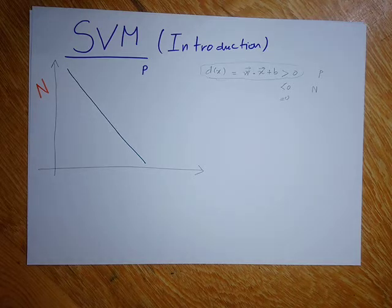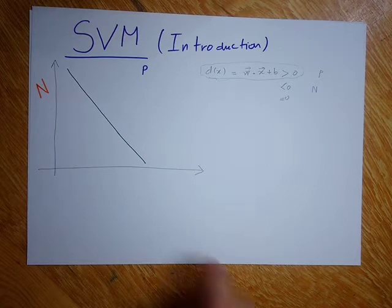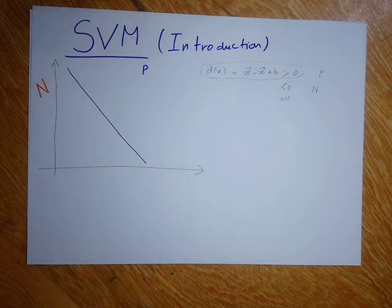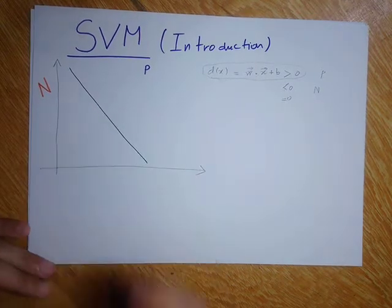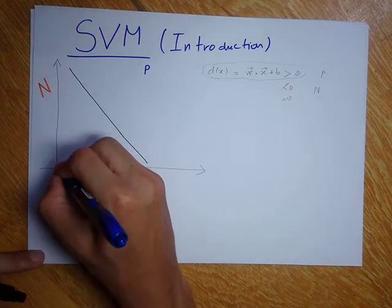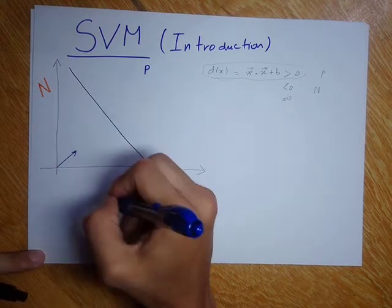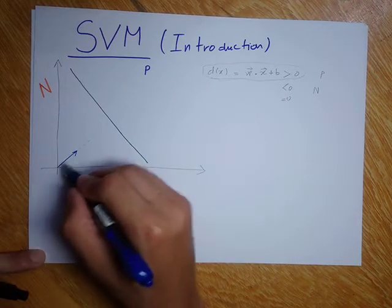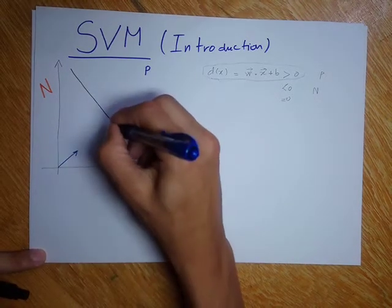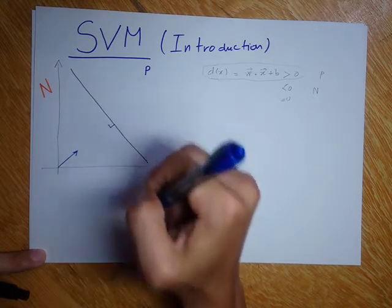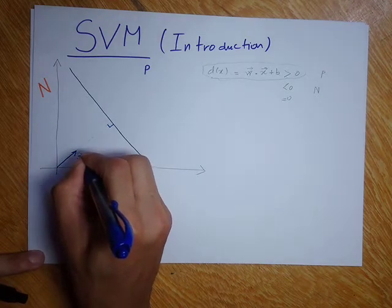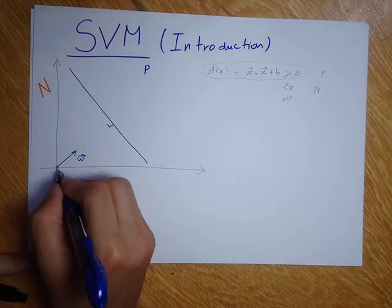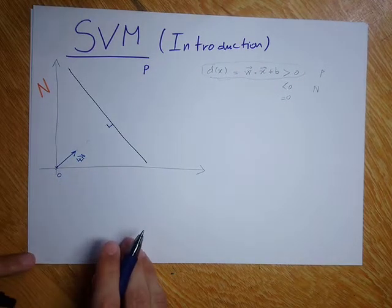Now, what I would do is consider a vector that is normal to this boundary. I would consider some vector W like that. This is a vector W that is normal to this decision boundary — that is, if I extend the line that passes from this vector, I should have 90 degrees. So I name this vector W. This point here is O, the origin of the feature space.